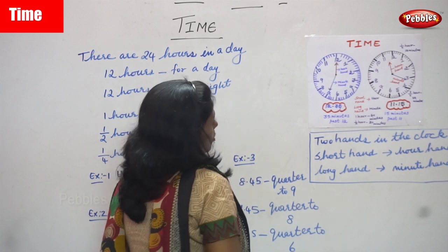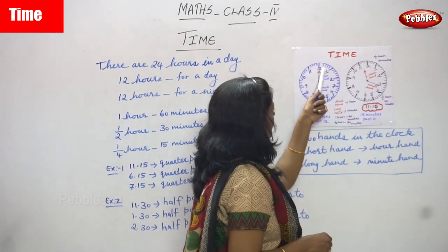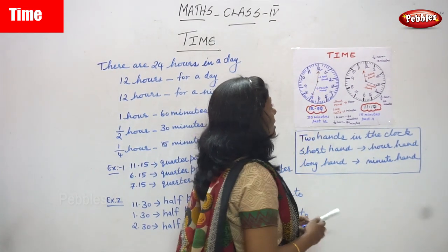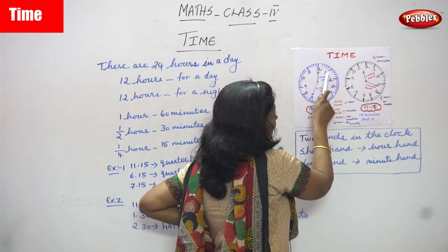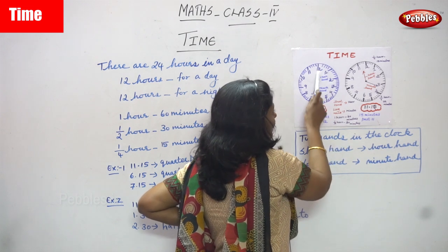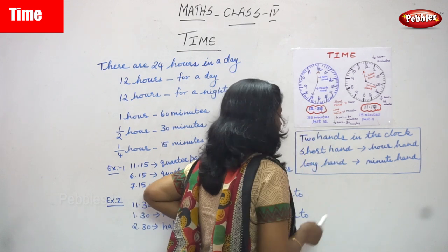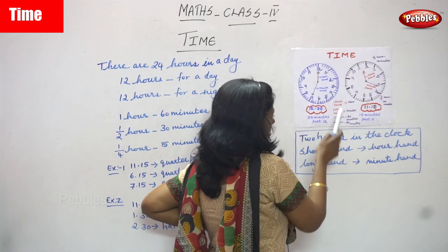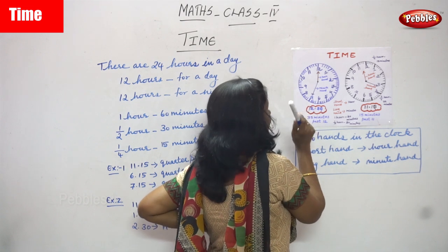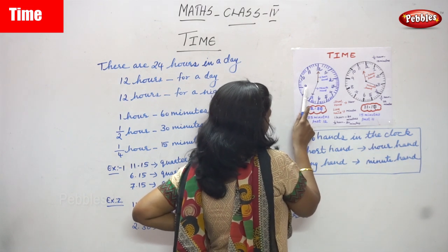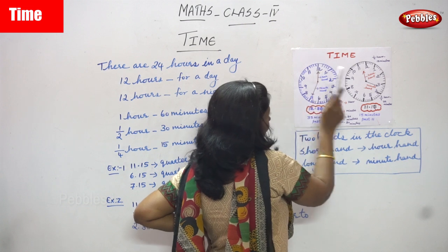Now, these numbers on the clock represent minutes. Each number represents 5 minutes. So 1 represents 5 minutes, 2 represents 10 minutes, 3 represents 15 minutes, 4 represents 20, 5 represents 25, 6 represents 30, 7 represents 35, 8 represents 40, 9 represents 45, 10 represents 50, 11 represents 55, and 12 is 60.